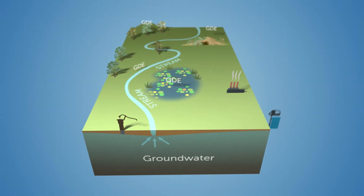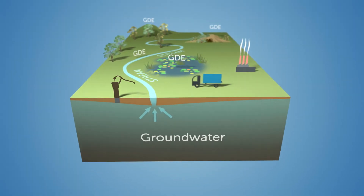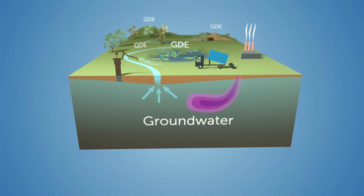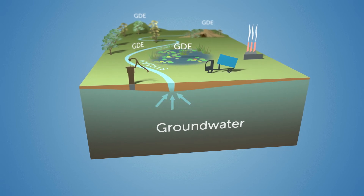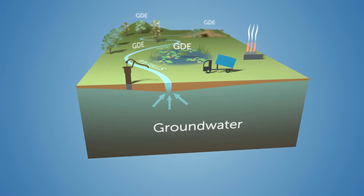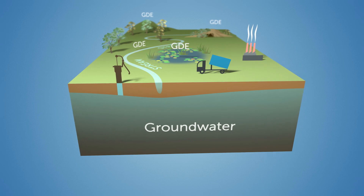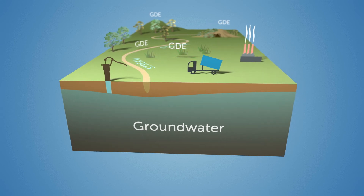Development activities like construction, mining and pumping can threaten these ecosystems. For example, pollution of groundwater and increasing salinity can degrade GDEs, and groundwater pumping can reduce water table levels and limit water supply to these ecosystems. So potential impacts on GDEs need to be considered in water management plans and environmental impact assessments.